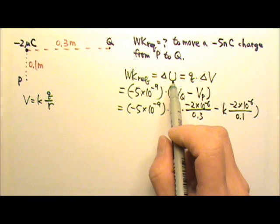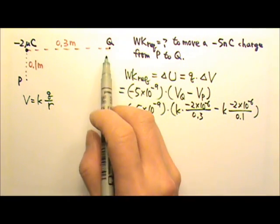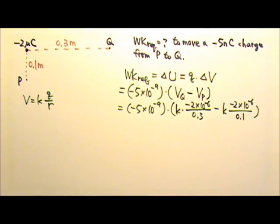The potential and potential energy, they are scalars. So there's no direction, no components to worry about. And this will give us negative 6 times 10 to the negative 4th joules.